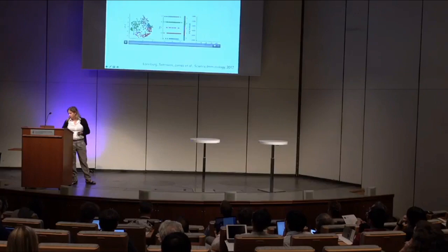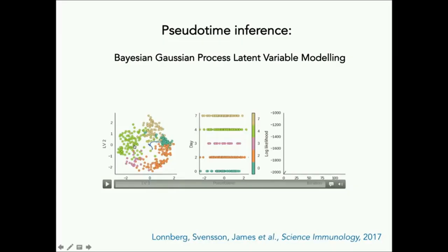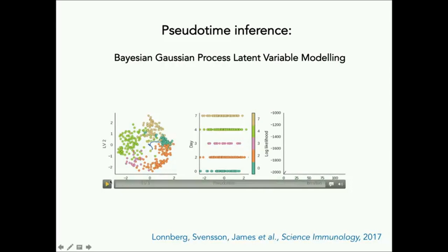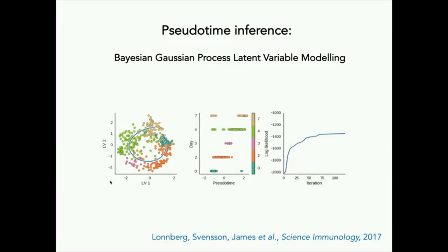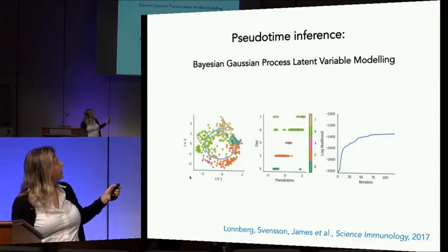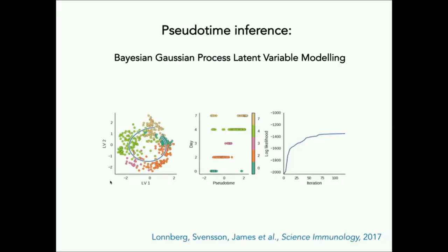From cells collected at different time points — day 0, 2, 3, 4, 7 — what we can learn from these few hundred cells is that they actually align developmentally. This pseudotime inference tells us about the developmental time course, meaning snapshot datasets give us developmental time at very high resolution. This uses a machine learning method — Bayesian Gaussian Process Latent Variable Modeling — and what's really been an eye-opener over the past five to seven years is the power of machine learning and this whole class of methods.